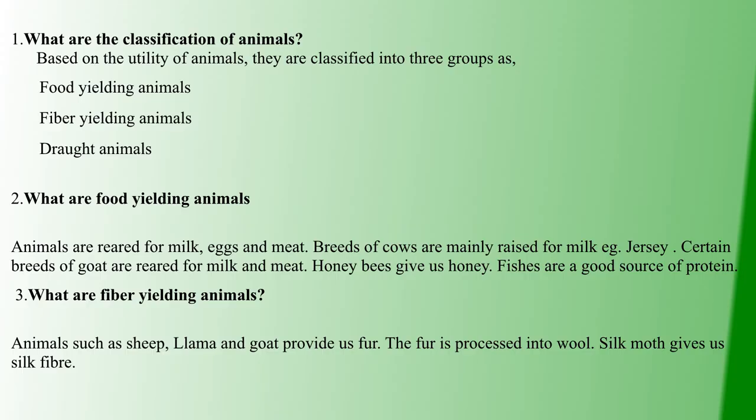First question: what are the classifications of animals? Animals are classified based on their purpose into three categories: food yielding, fiber yielding, and drought animals.